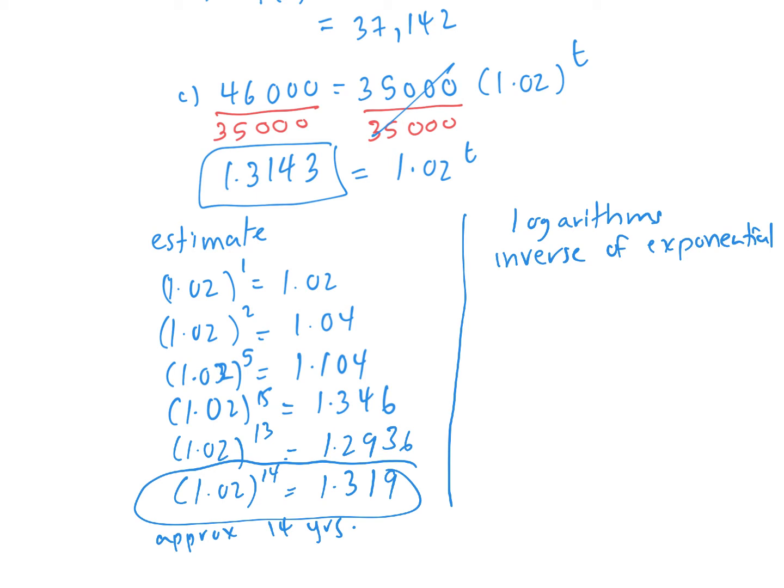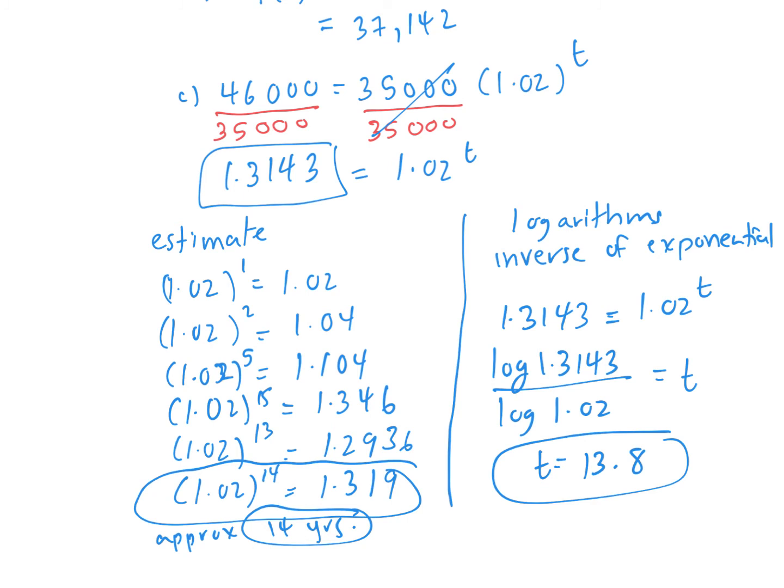Logs undo exponential functions. You have a log button on your calculator. I can log the answer and divide it by log of the base—this is called the change of base formula. So 1.314 divided by log of 1.02. I'm using the log button, which is log base 10. My answer is 13.8. We approximated 14, so we're pretty close. This is more exact, whereas trial and error gives an approximation.